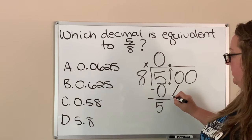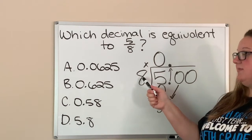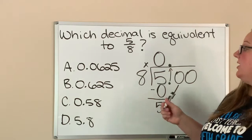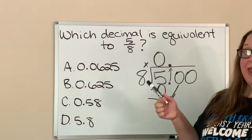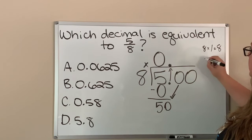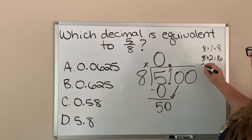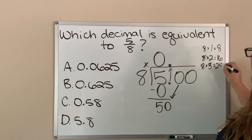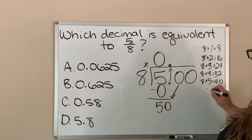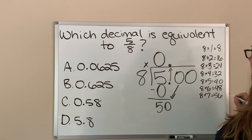Now we bring this zero down. My next step is to ask myself how many times can eight go into 50. This is where my multiplication facts are going to help me. If I don't know that off the top of my head, I'll write my eight times tables: 8×1=8, 8×2=16, 8×3=24, 8×4=32, 8×5=40, 8×6=48, 8×7=56.